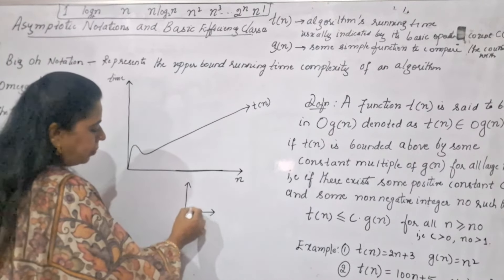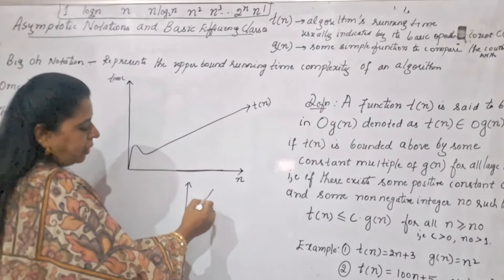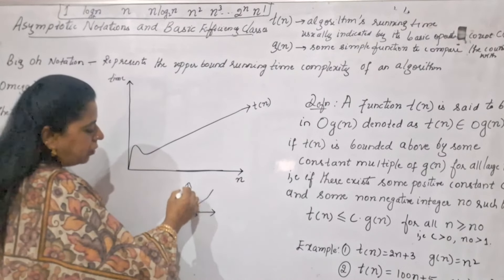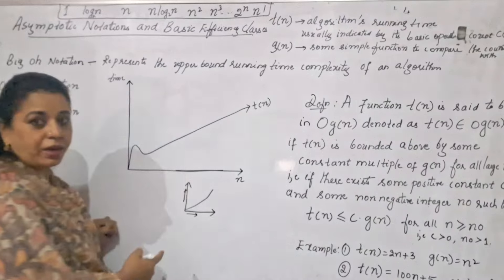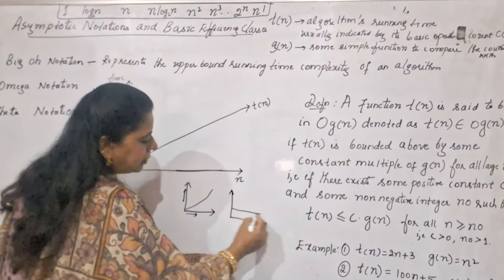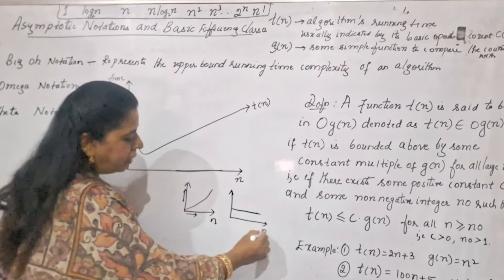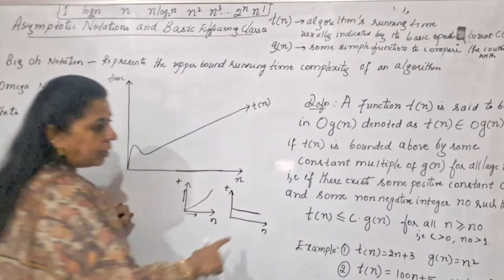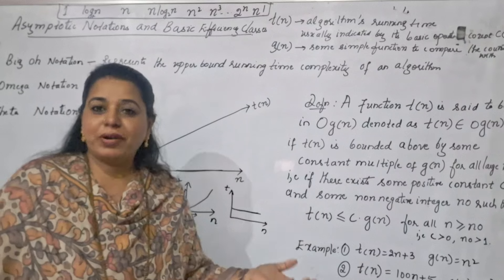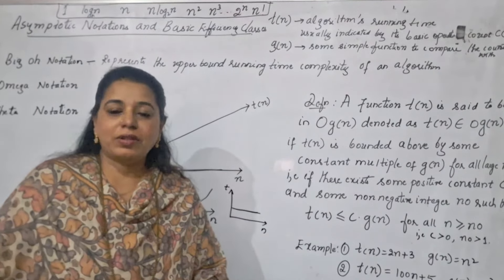Sometimes you can see the algorithm is behaving in a linear manner. We say this is linear behavior because as the input increases, the time to complete the execution of the algorithm also increases. Sometimes we get a constant behavior also — whatever may be the input value n you are giving, the algorithm takes the same amount of time to complete its execution. So we get different types of behavior when we plot the graph of time versus n for different algorithms.